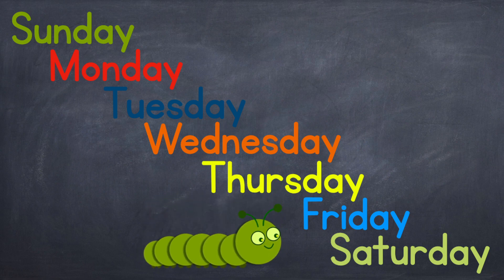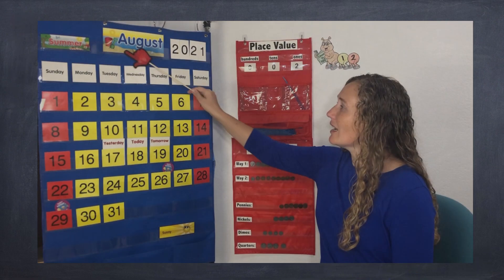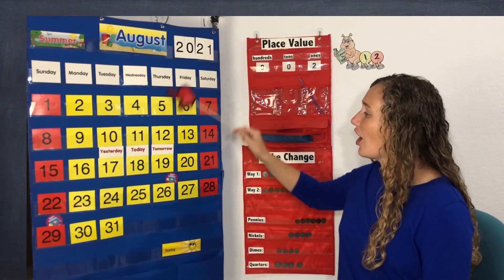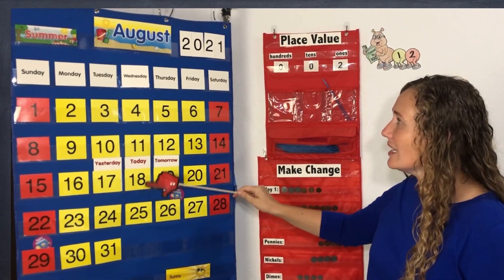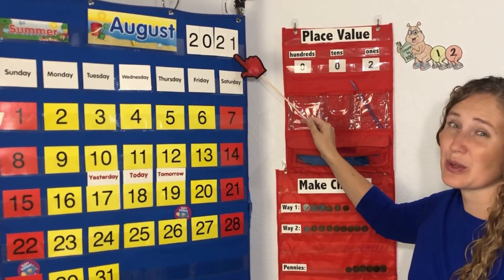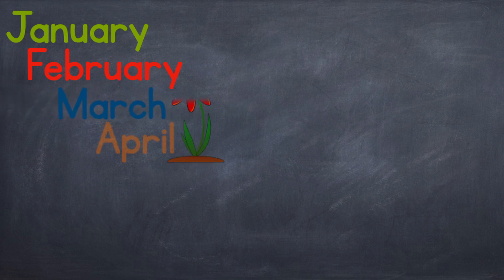Now we know all of our days of the week. What about all the months of the year? There are twelve of them, so sing along with me. In January and February we're starting the year, March and April, spring is here.